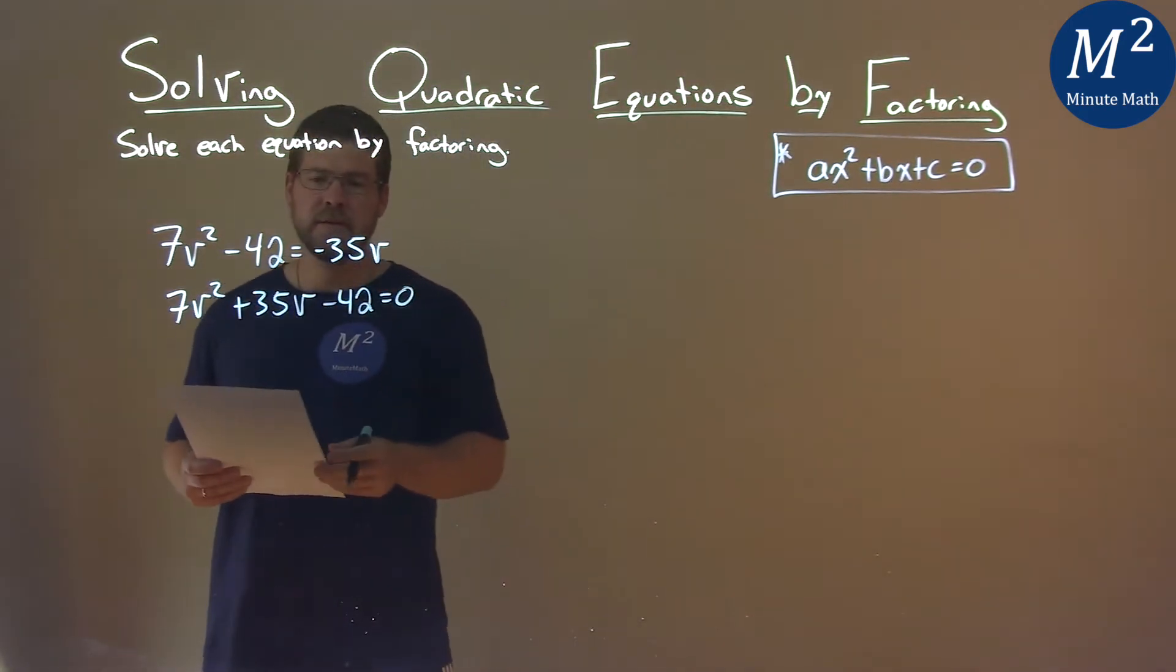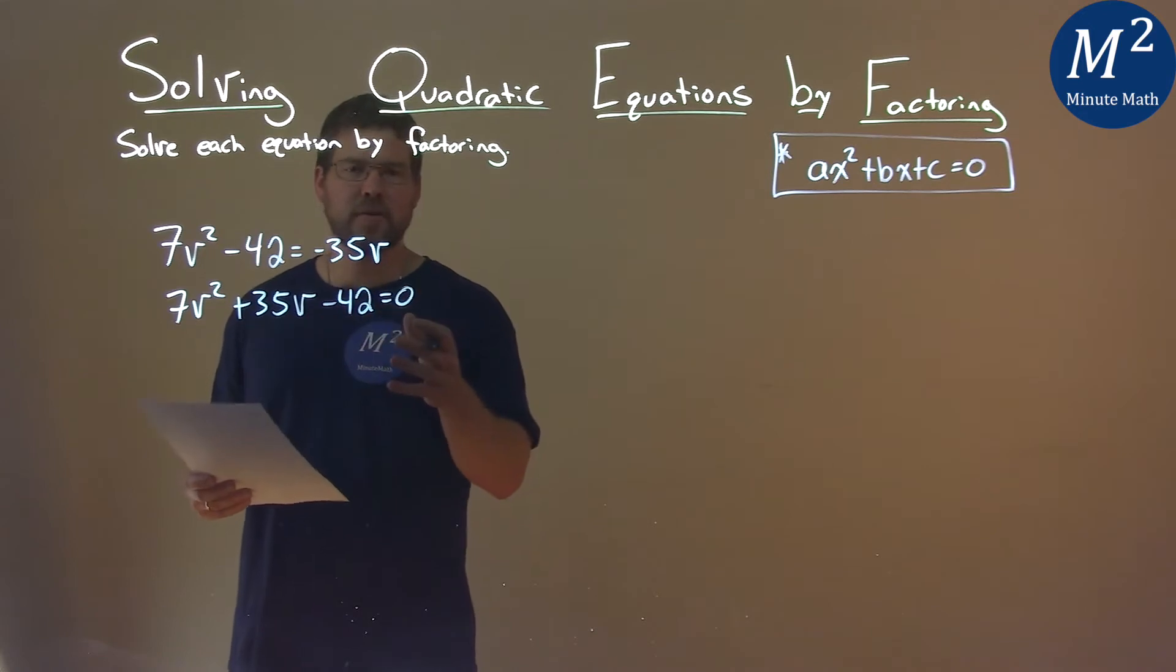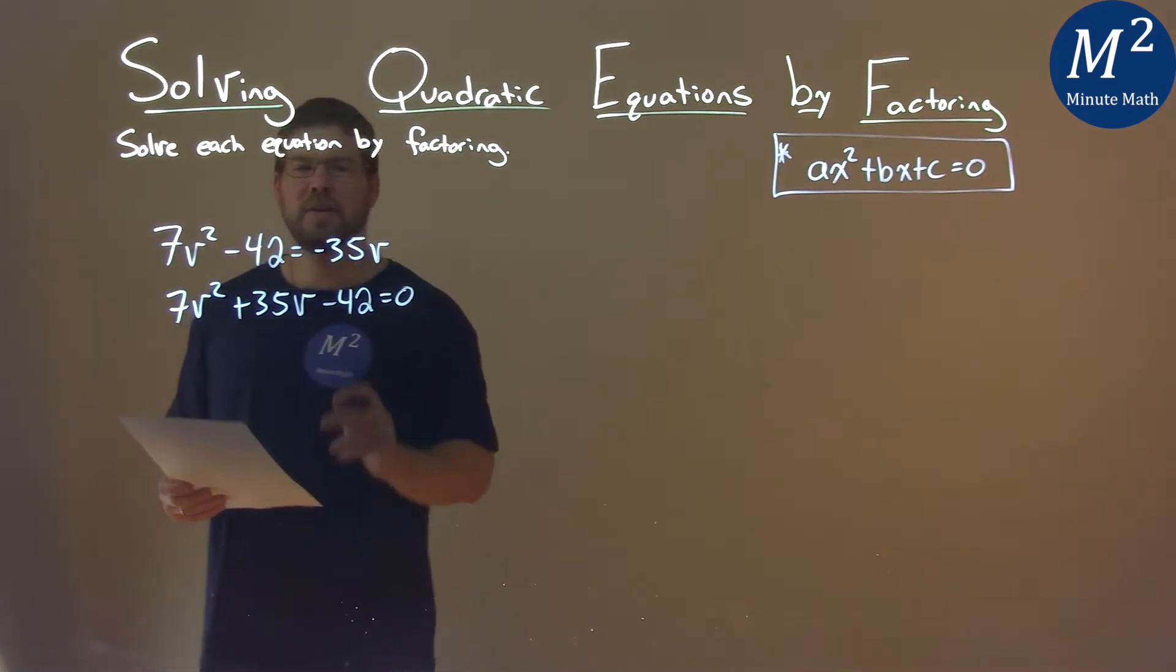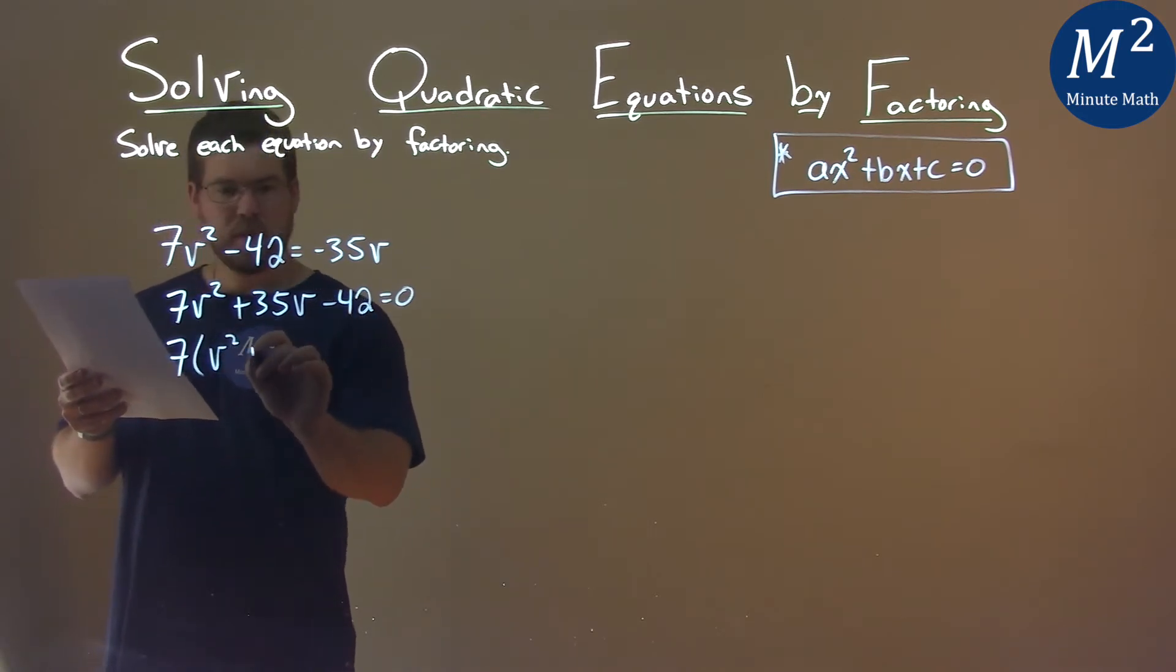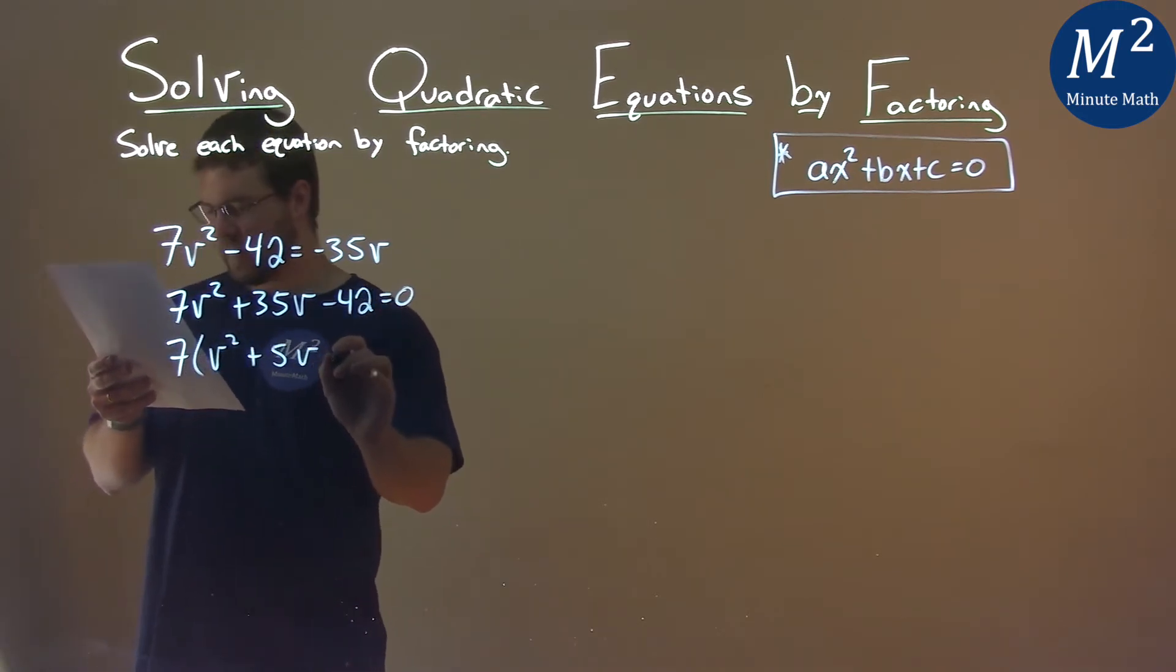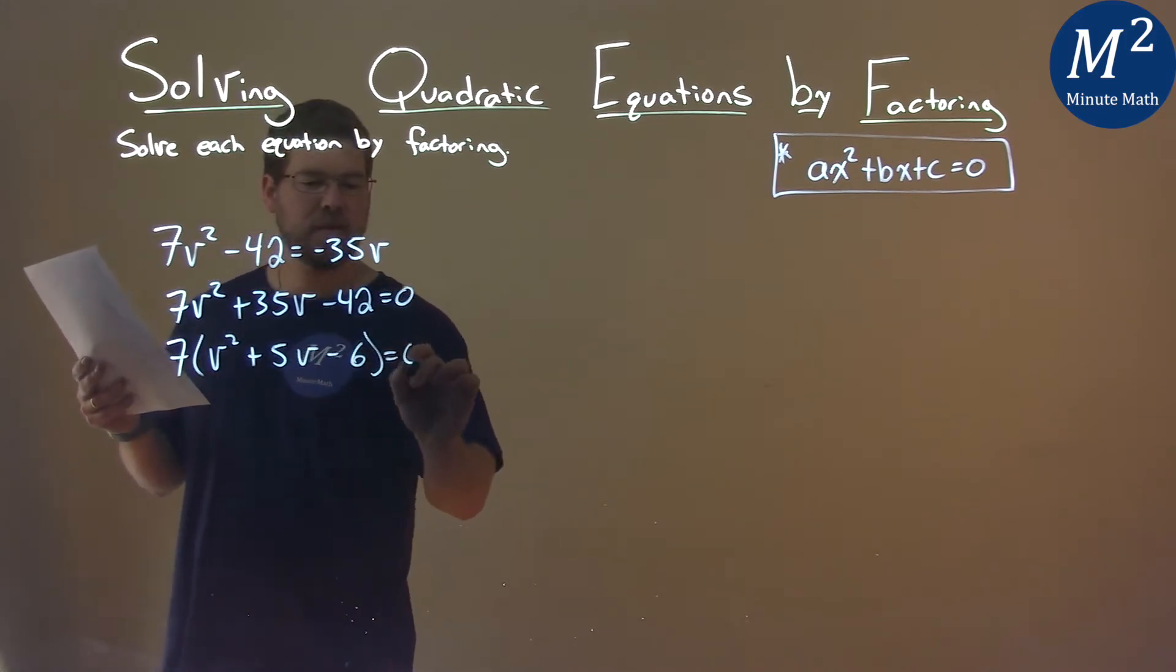Now from here, I don't want to hop right in to factor. I see a 7 goes into each one of these numbers, so I'm going to pull that out. If I pull out a 7, I have v² + 5v - 6 = 0.